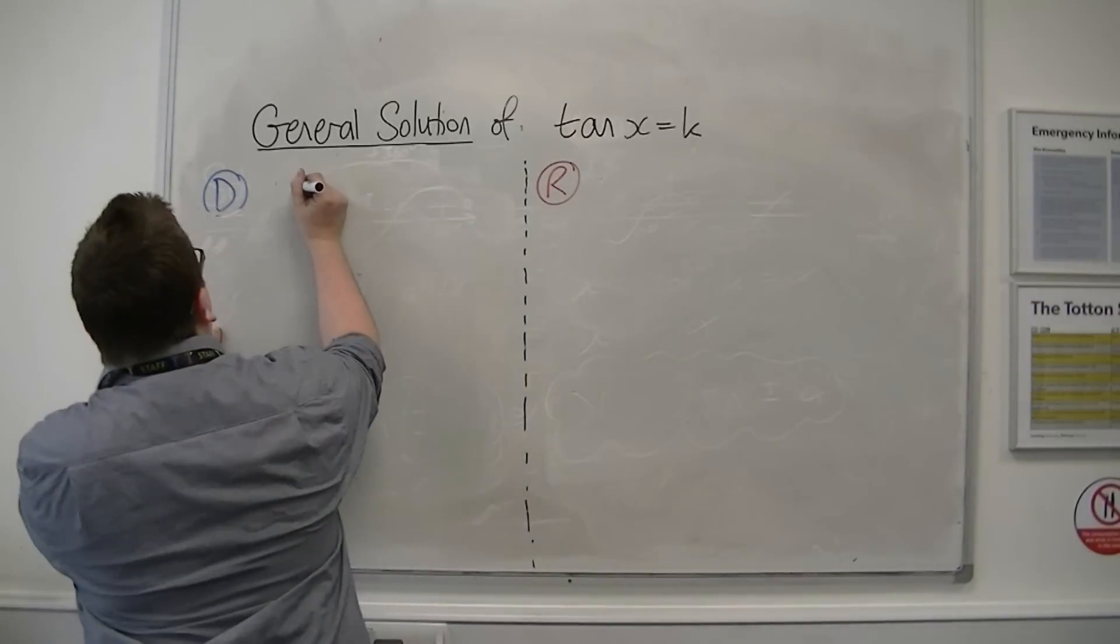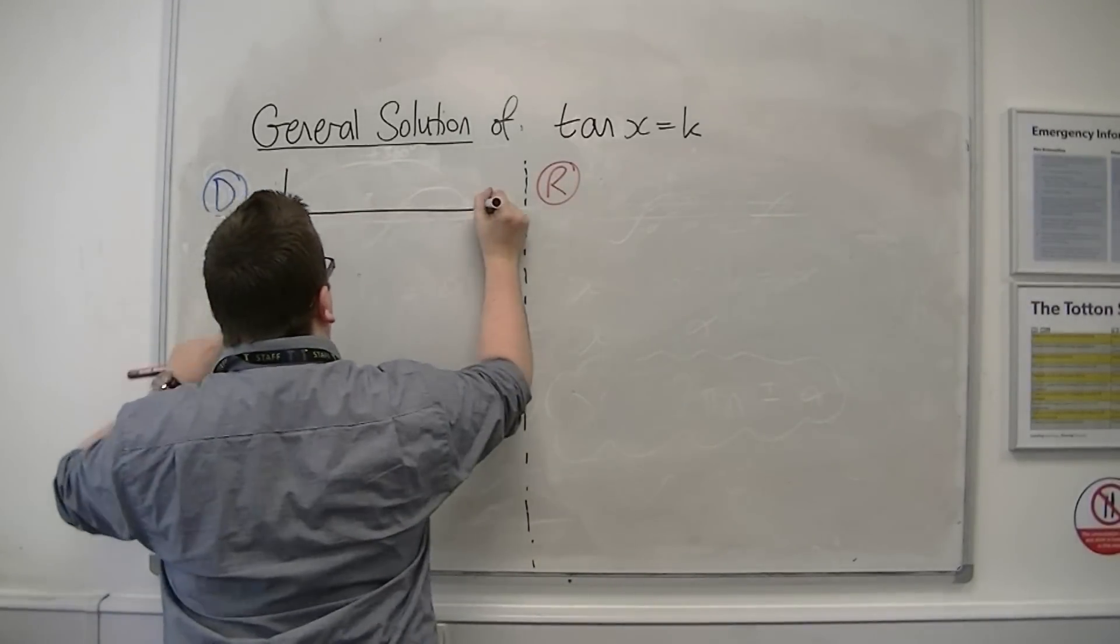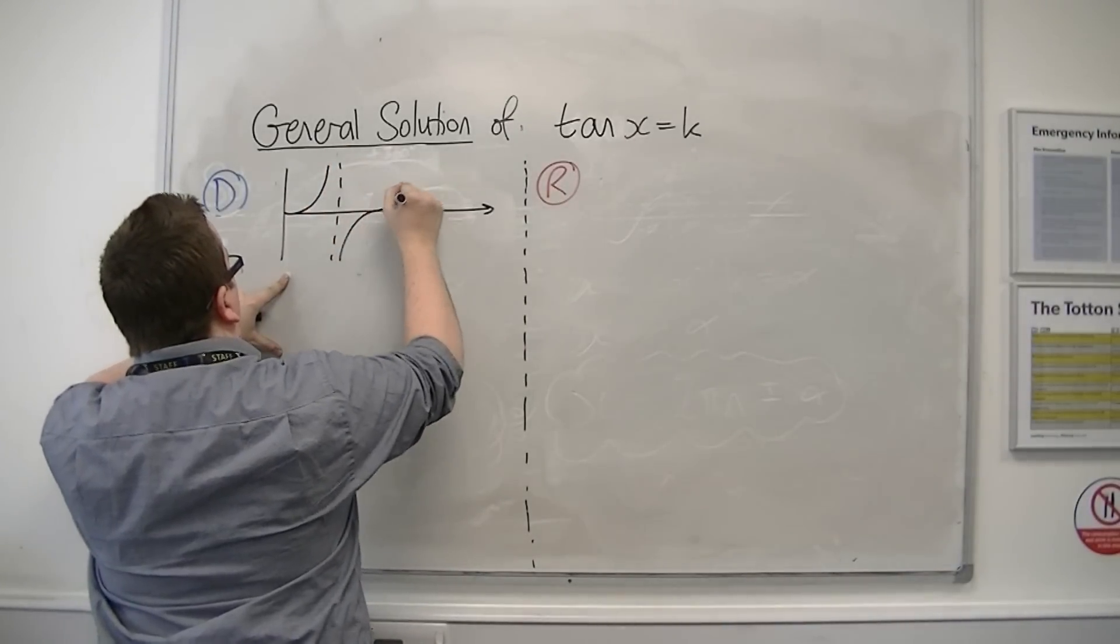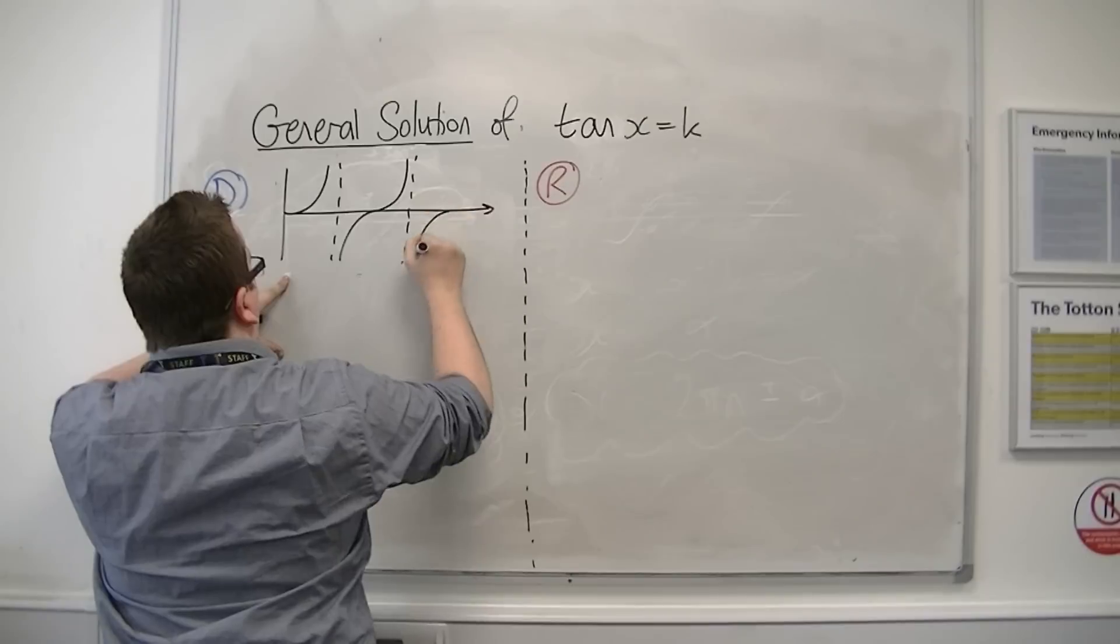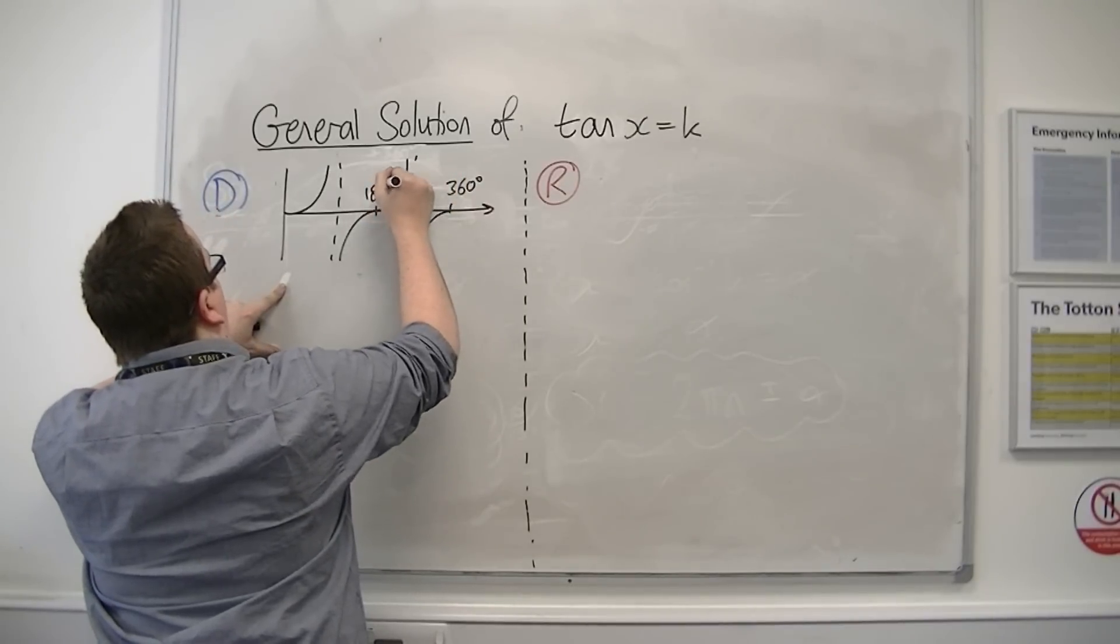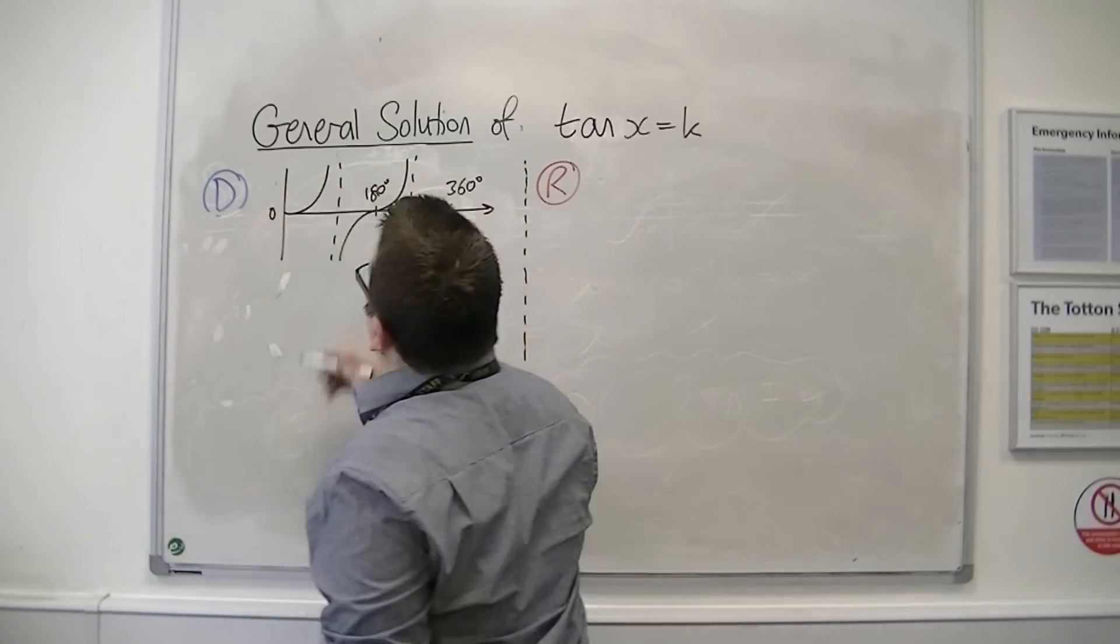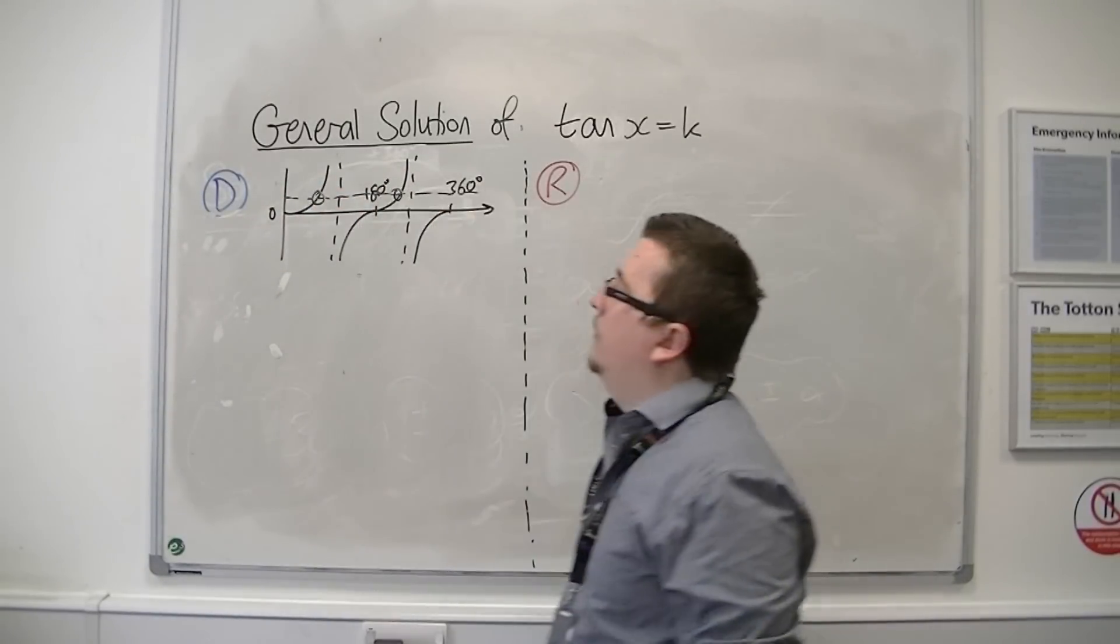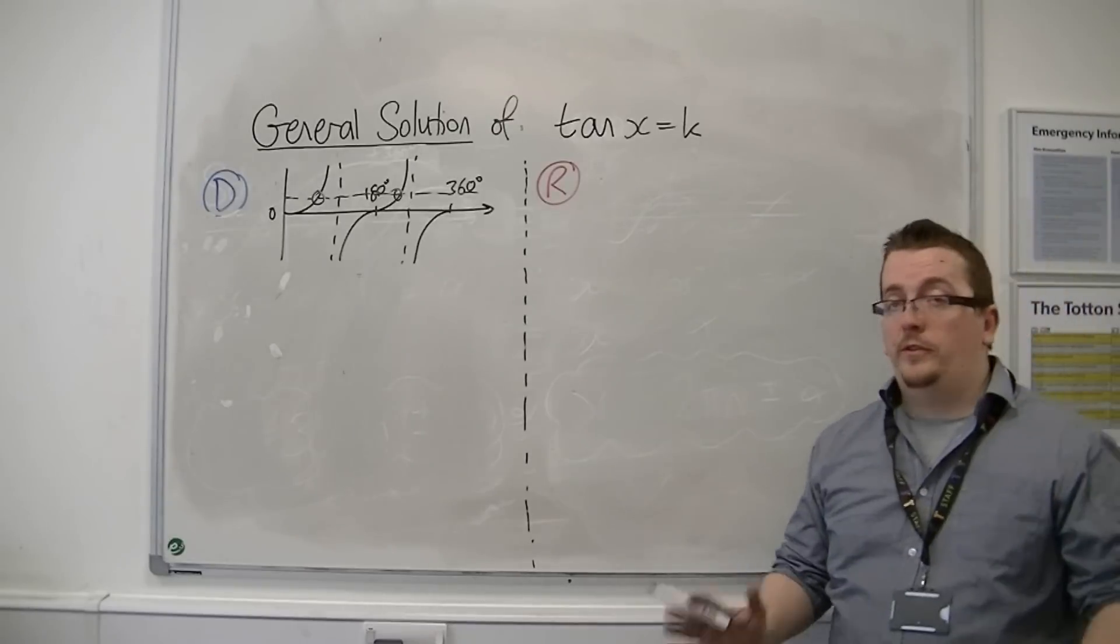Let's look at tan in degrees first. There's tan between 0 and 360. And k, you can see, will be intersecting at two points on the curve between 0 and 360.